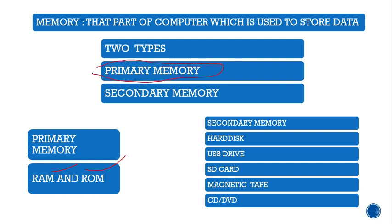Primary memory is the necessary part of the computer in order to run any program or task. It has two types: RAM and ROM. RAM stands for Random Access Memory. RAM is the type of primary memory used to store data and run the machine. It stores data temporarily, not permanently — it is volatile in nature, meaning it needs electricity to store the data.